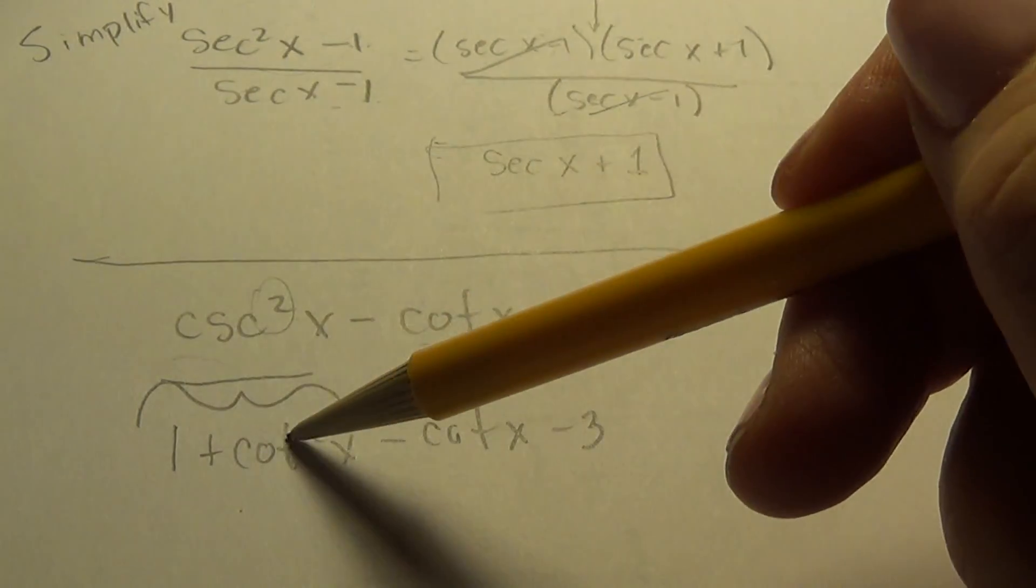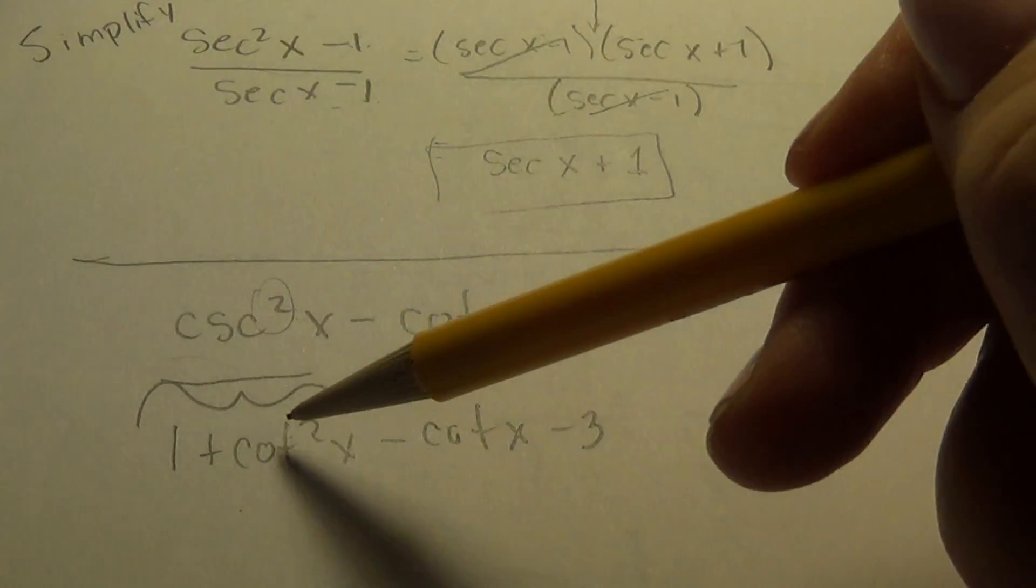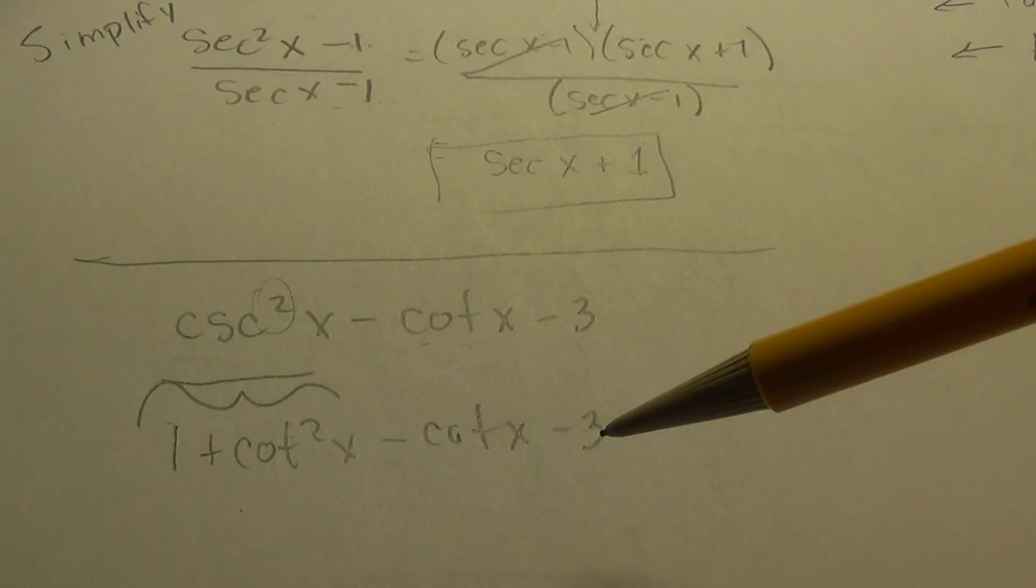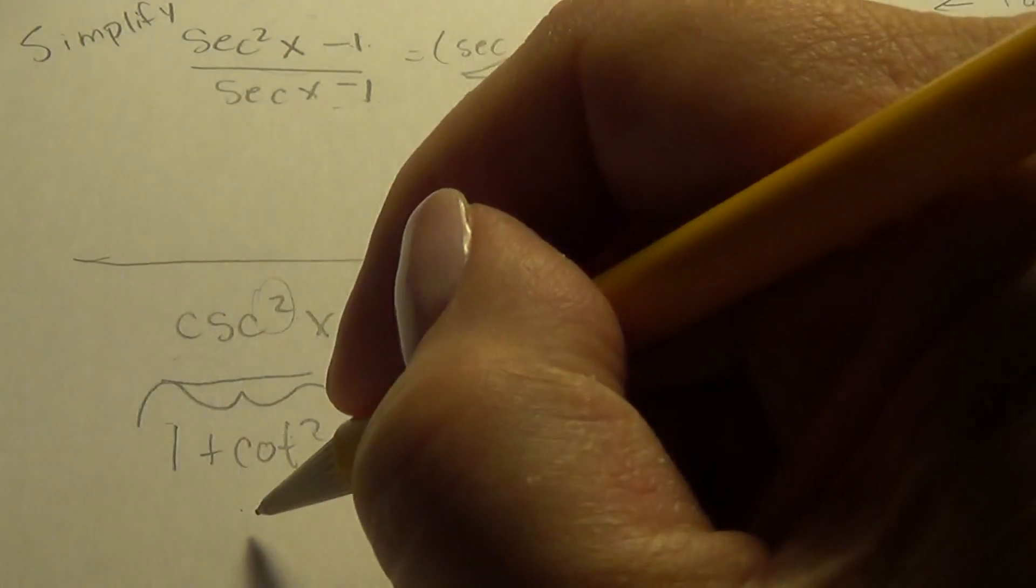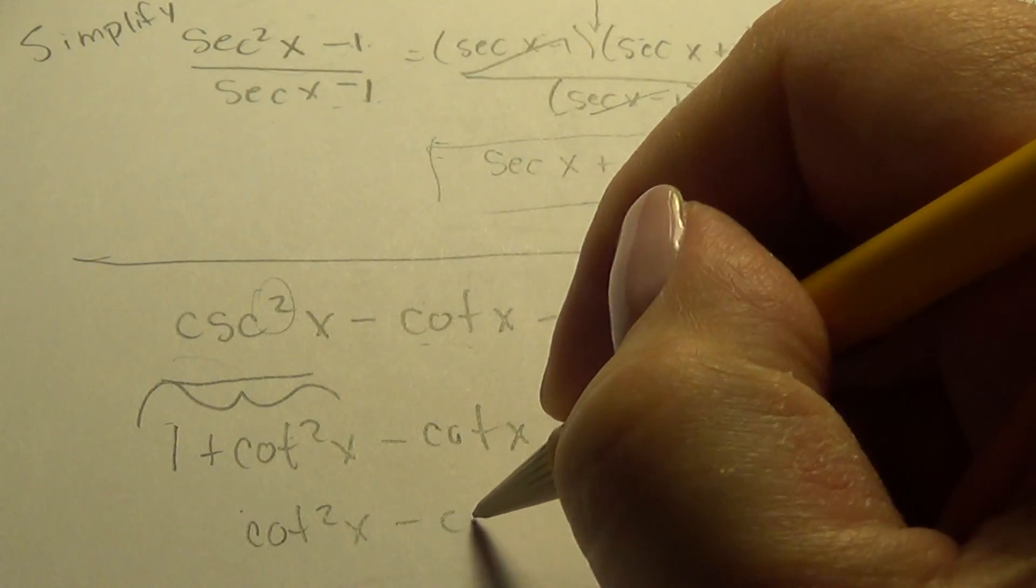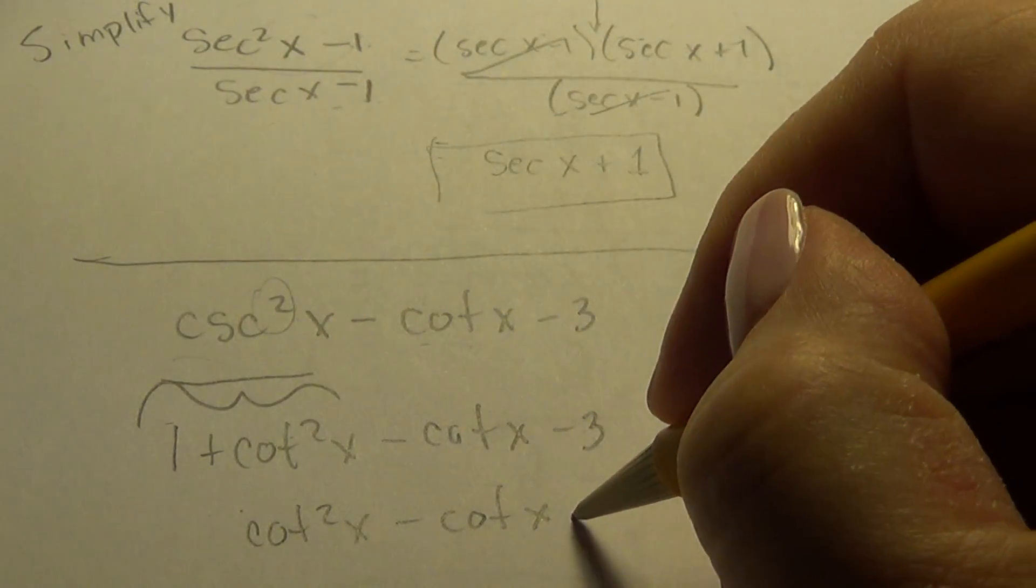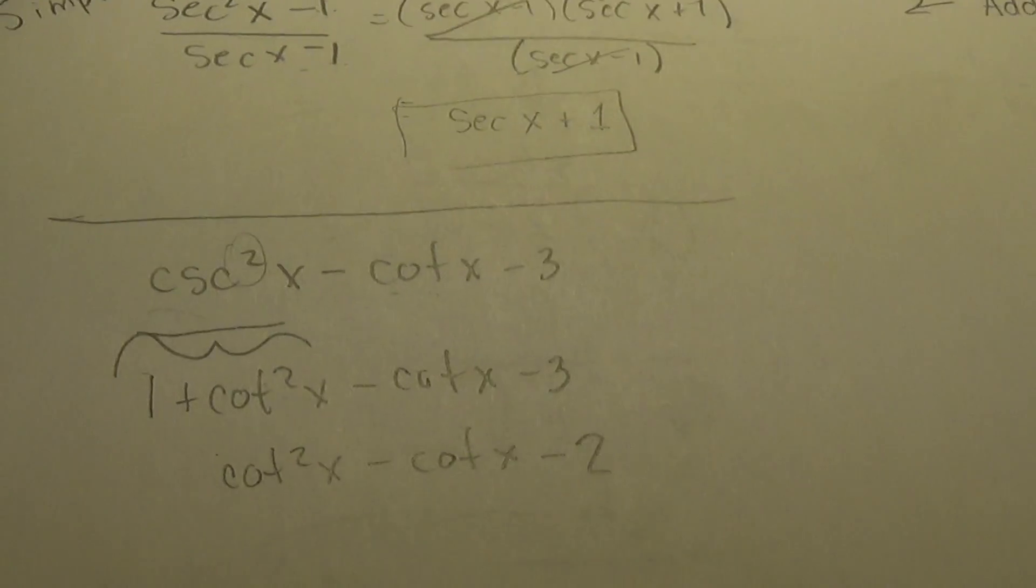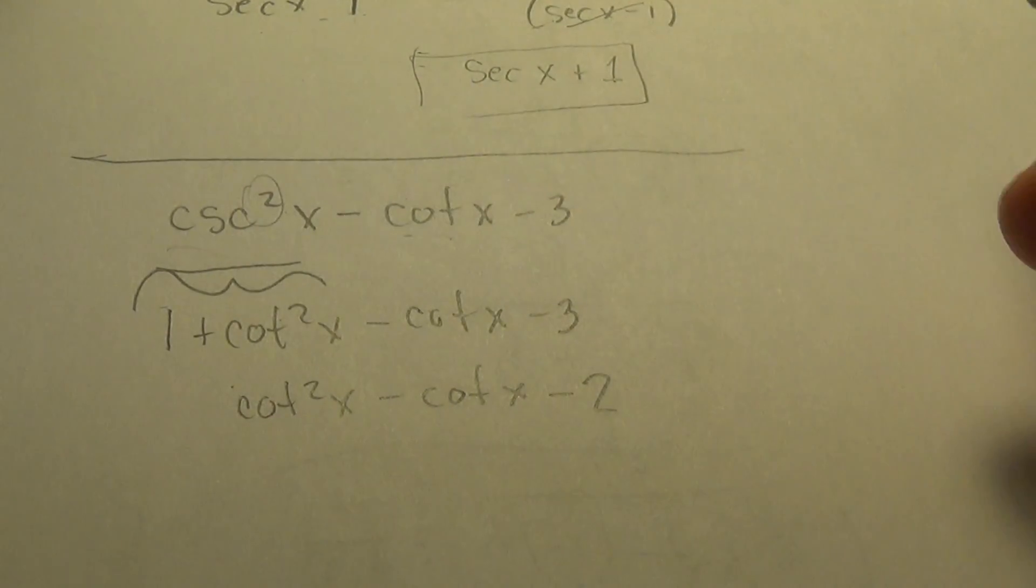And there, now I have at least the same trig function throughout the problem. So let's simplify what's there. We have a one and a minus three. And we have a cotangent squared, minus cotangent, and a minus two. And I combine the one and the minus three.